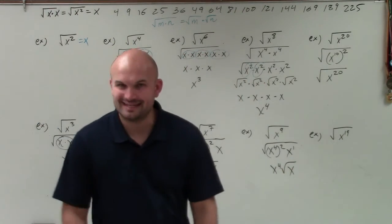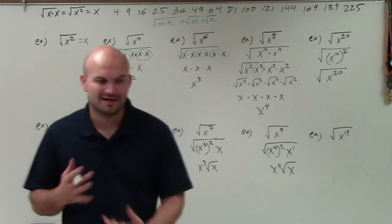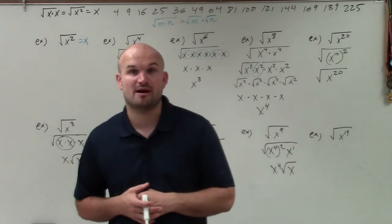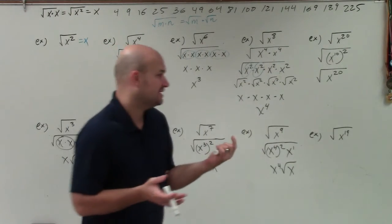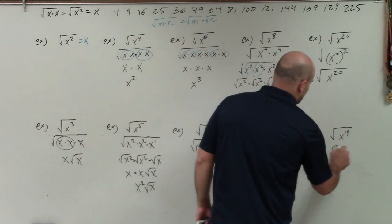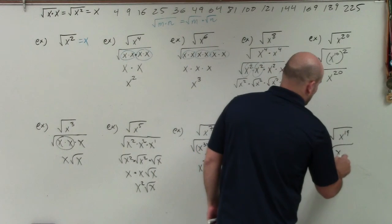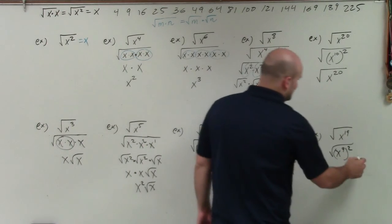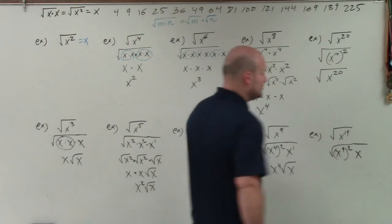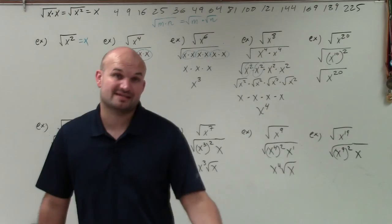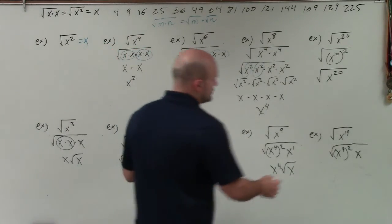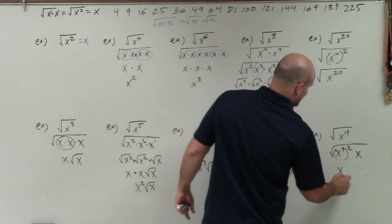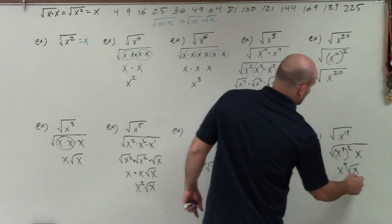Hopefully you're seeing the pattern. For x to the 19th: I can't get to 19 by raising to a power of 2, but I can get close. The square root of x to the 9th squared gives me 18 — and multiplying by x one more time gives 19. So the square root of x to the 9th squared, since the square root and the squared undo each other, leaves me with x to the 9th times the square root of x.